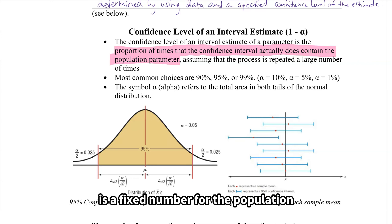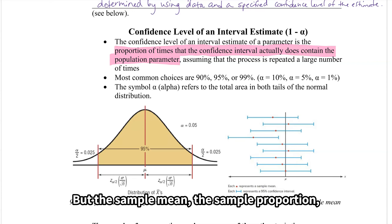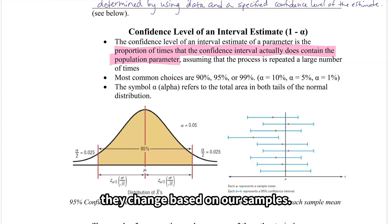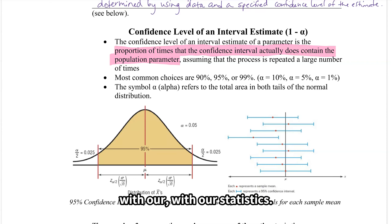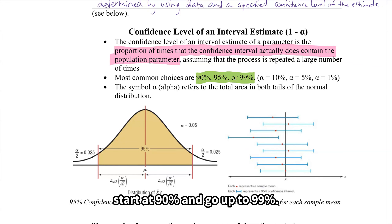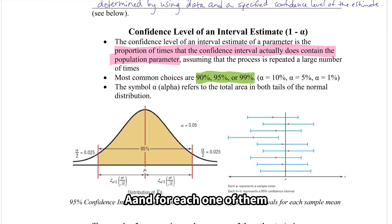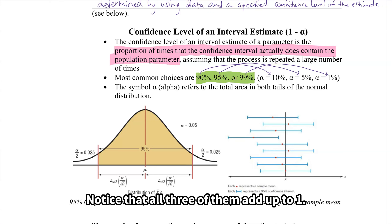The population parameter is a fixed number — whether it's the mean, proportion, or variance, it's fixed. But the sample mean, sample proportion, and sample variance change based on our samples, so we have this notion of variability with our statistics. The most common confidence levels are 90%, 95%, and 99%. Each has a corresponding alpha: 90% has alpha of 10%, 95% has alpha of 5%, and 99% has alpha of 1%. Notice that all three pairs add up to 1.